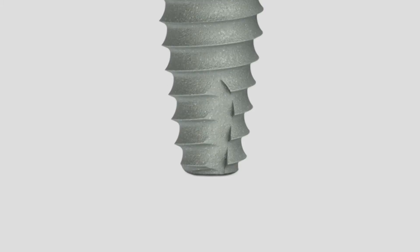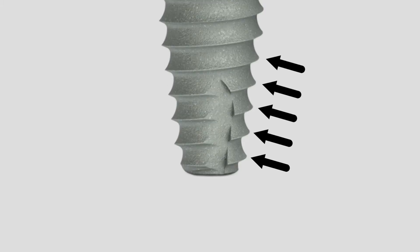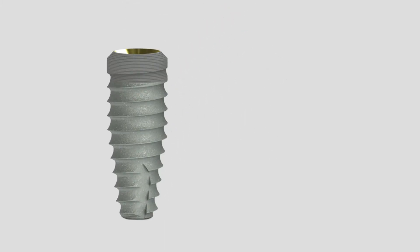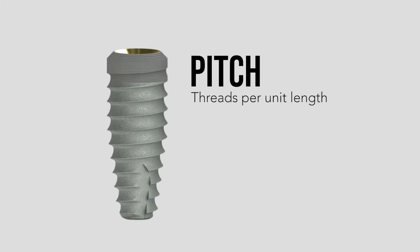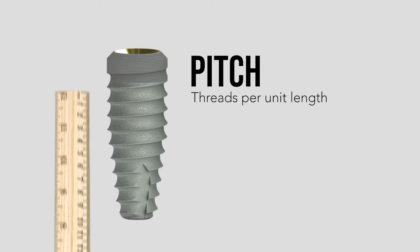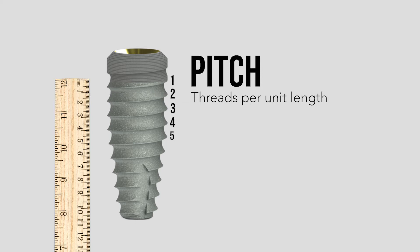As we've established, we need to get at least five threads into the bone for primary stability. When you have an implant like this one, the pitch — which is the number of threads per unit length — is about one thread per millimeter. So if you want to estimate the length of the implant, you can simply count the threads and discover that it's about 10 and a half millimeters long.